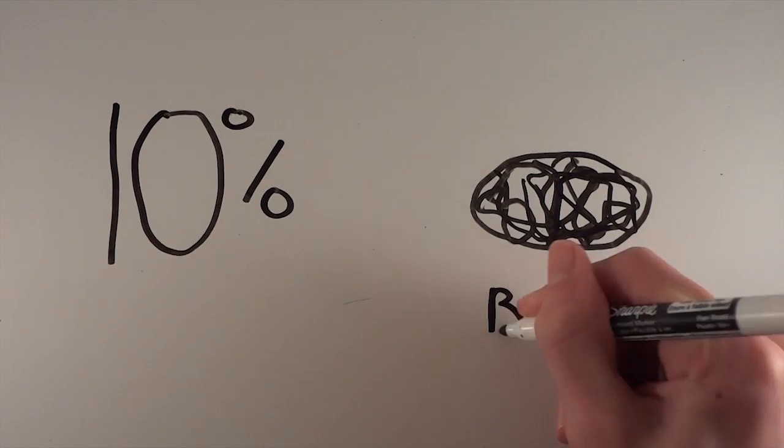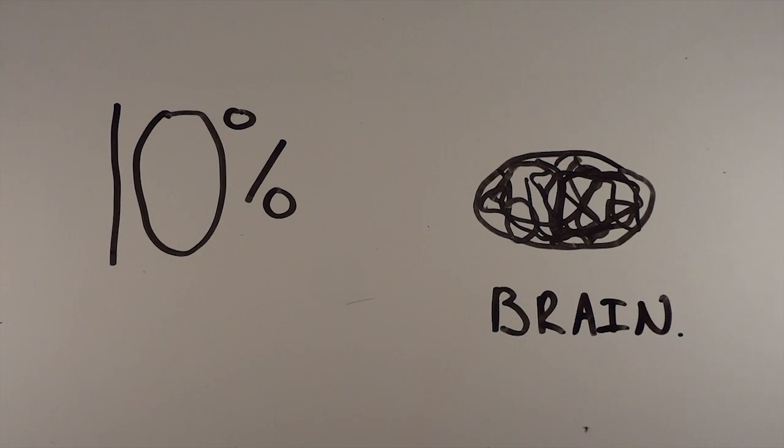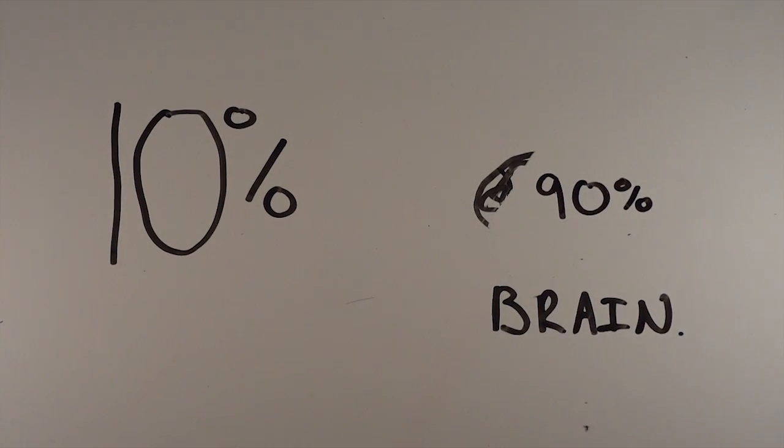You've probably heard that you only use 10% of your brain, and that people like Einstein could use 90% of their brain. This is a myth though, because if you could only use 10% of your brain, you'd be pretty close to being dead or in a coma. And if you took 90% of your brain out, things wouldn't go very well for you.